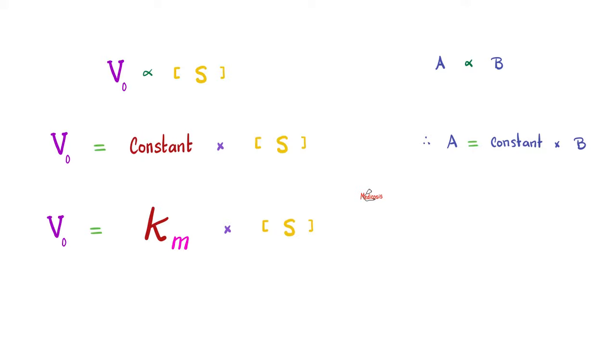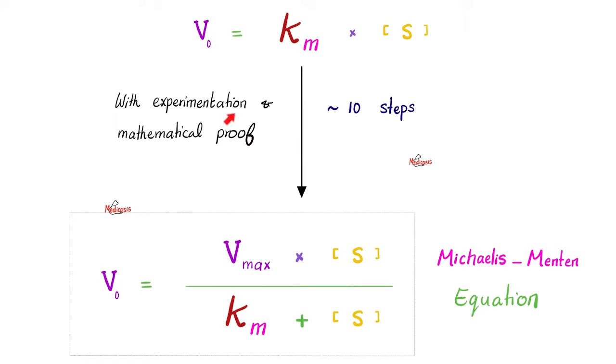What's the constant here? The Km, the constant of Michaelis-Menten. And then from this, using some math proof, we arrived at this as we have discussed before. We'll do a very similar thing today.